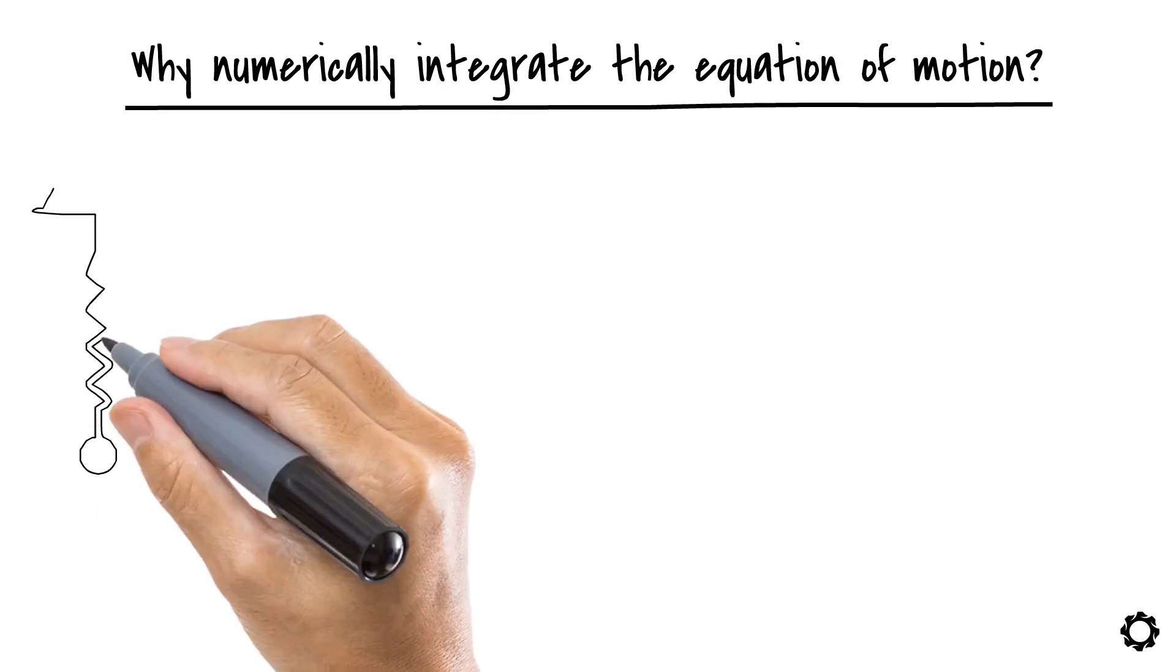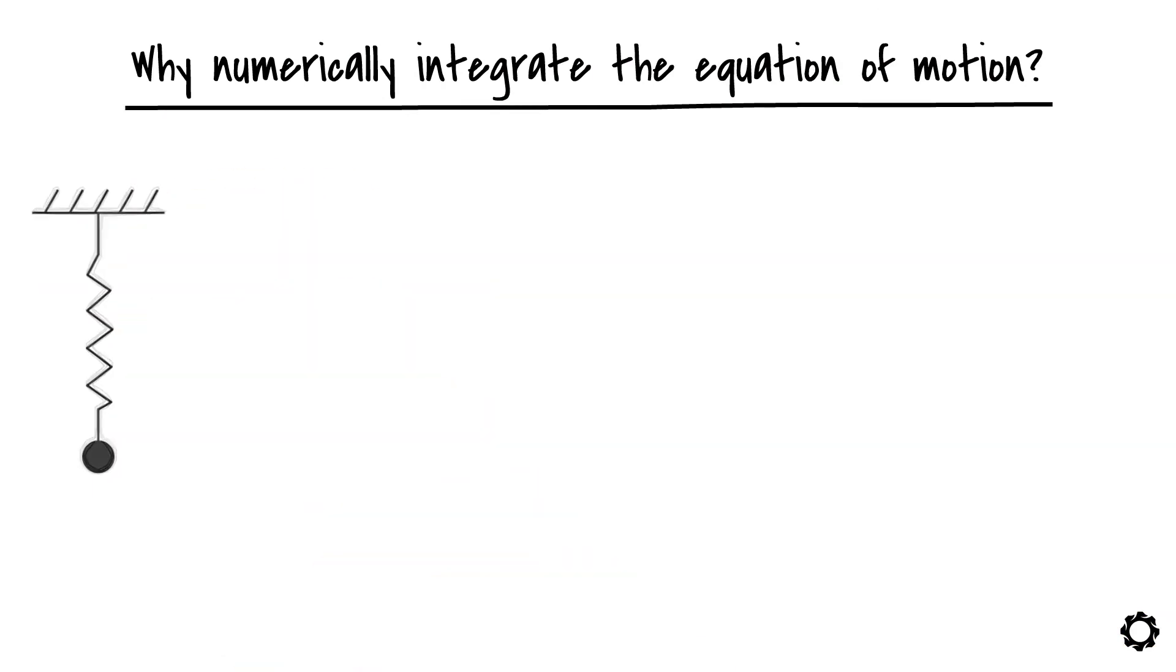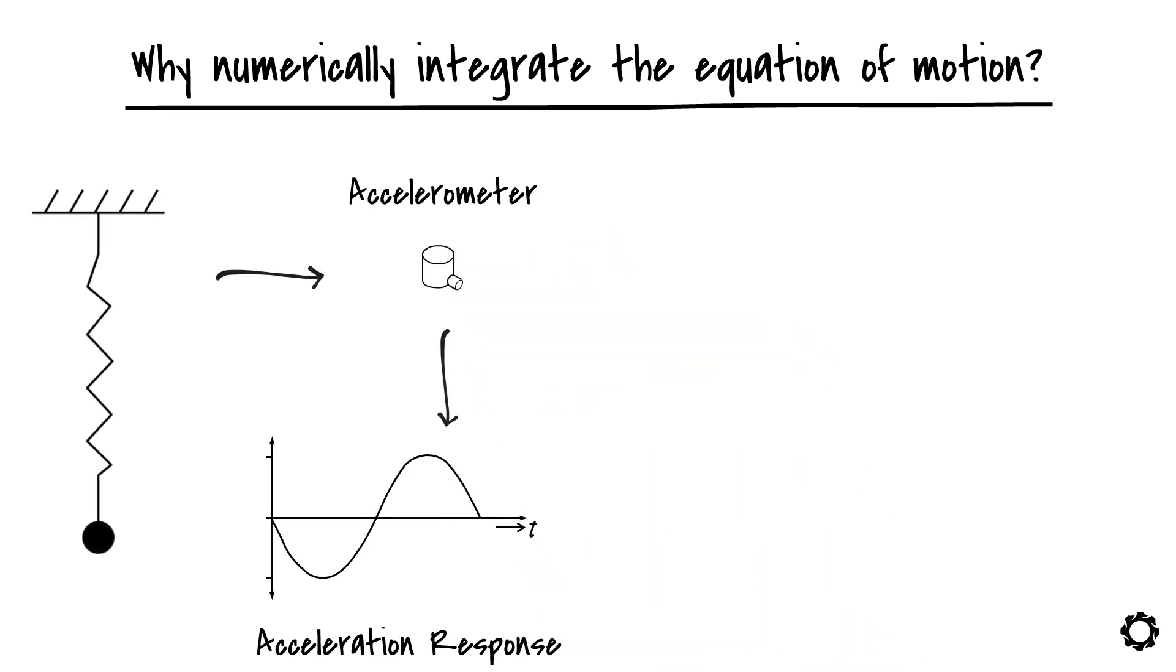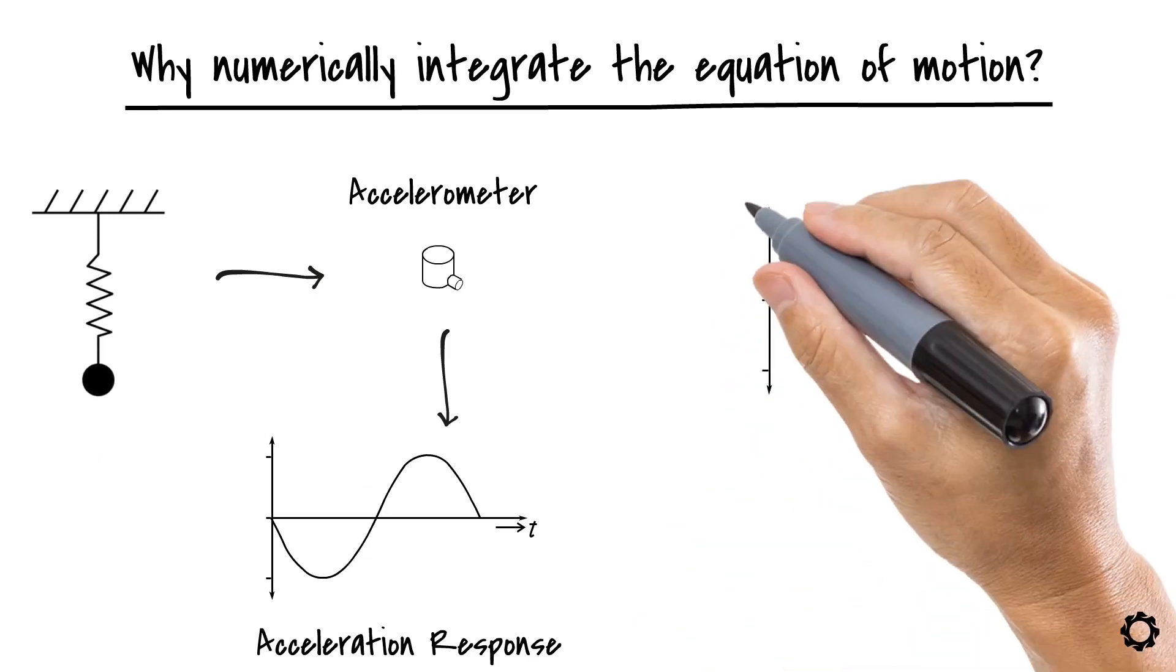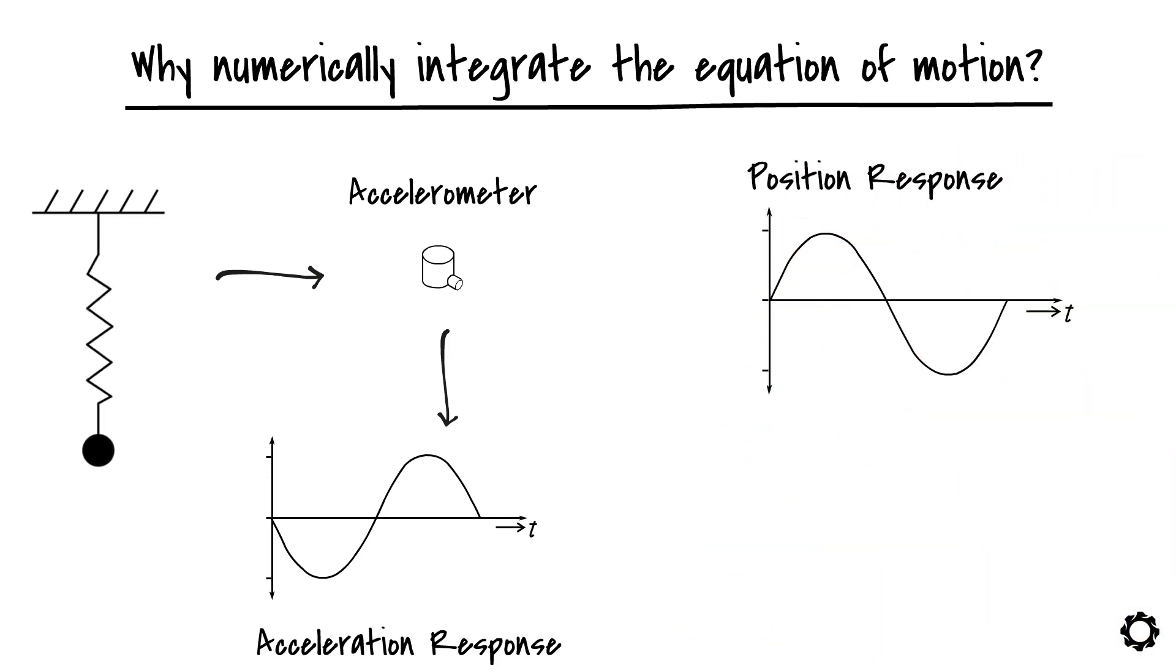Well, to answer that, consider the following scenario in which we are measuring the acceleration response of a dynamic system to a given force by using an accelerometer. In this scenario, we will be able to measure the system's acceleration response. But what if, at some point, we would like to also obtain information about the position response? How can we do it? Remember, we can't use an accelerometer directly because it only measures the system's acceleration response.